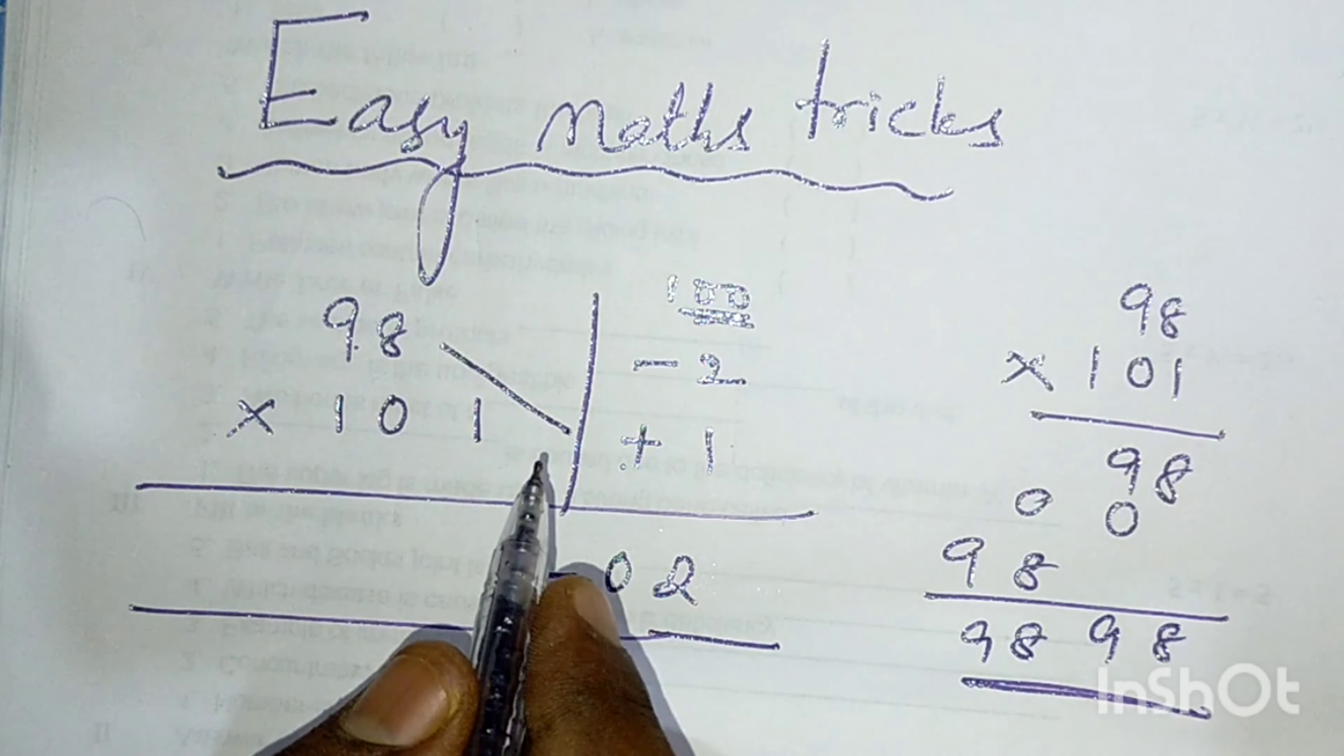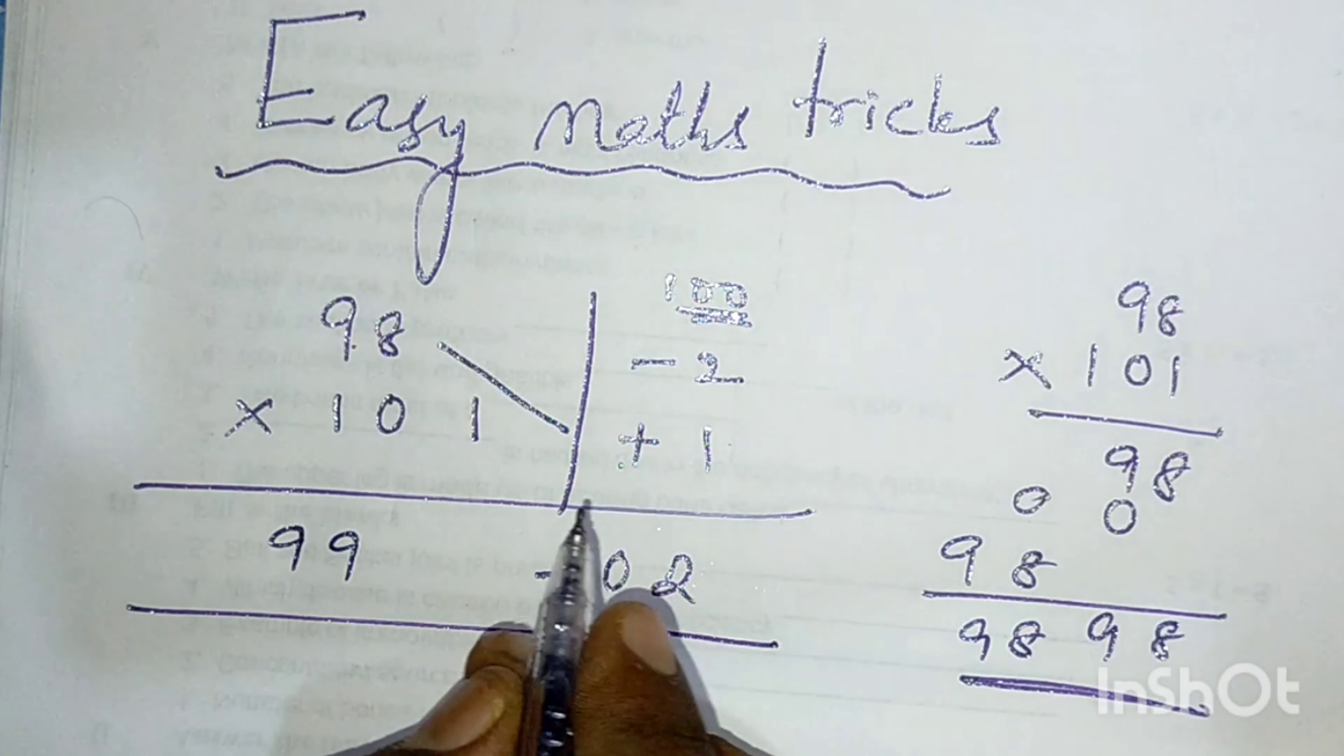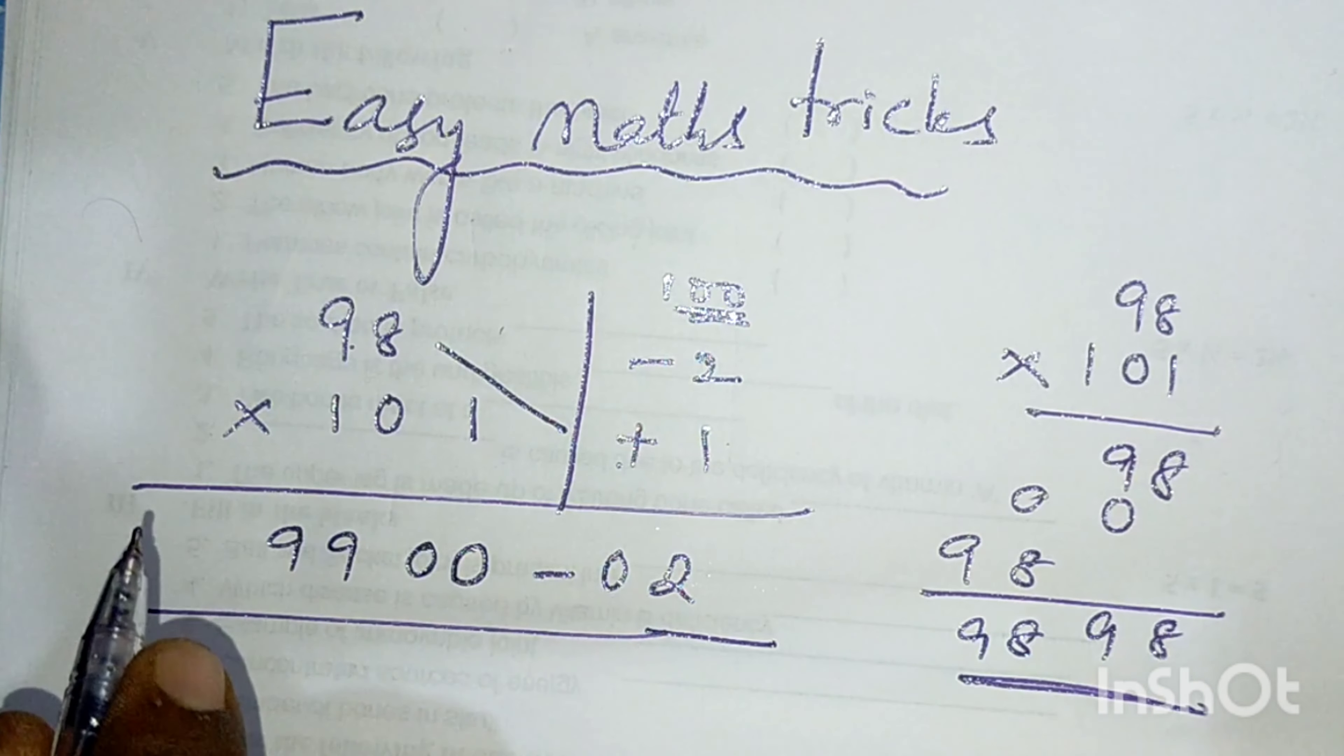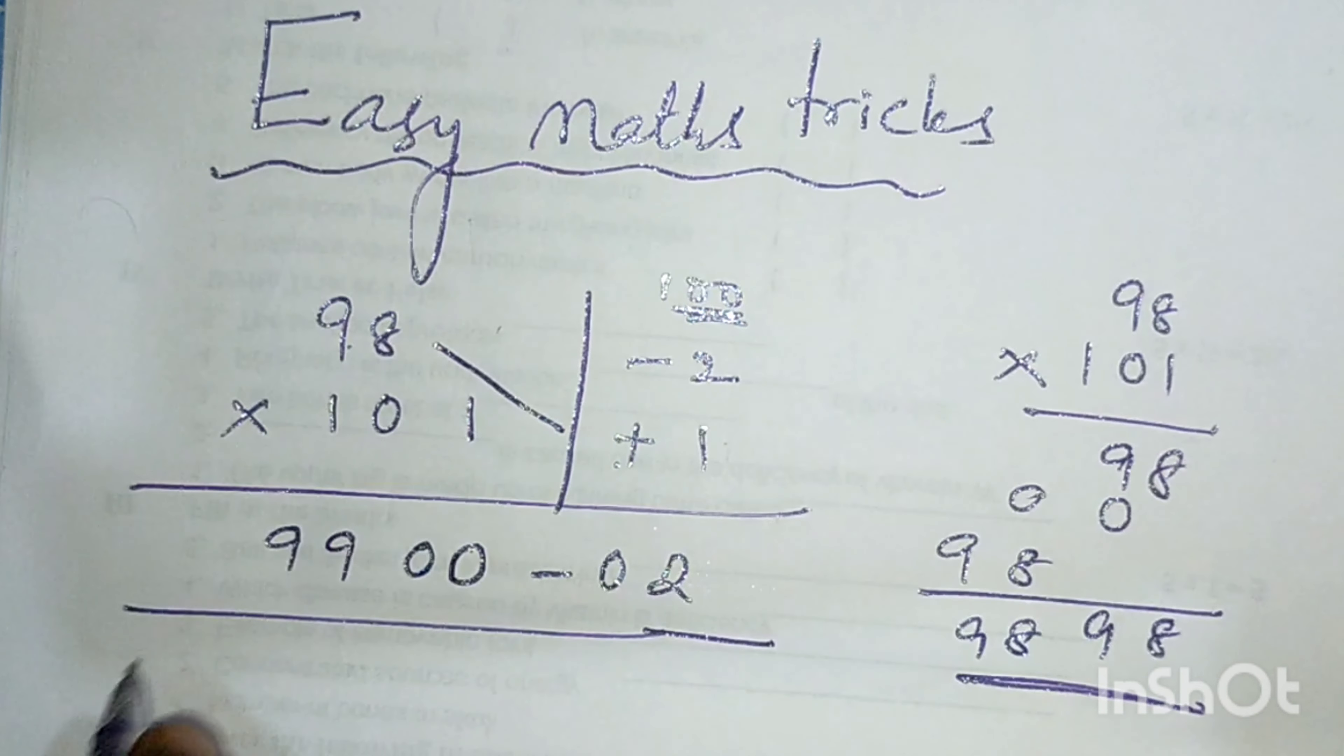101 minus 2 is also 99. And here when we are taking minus, direct answer we not get. We have to take two zeros in unit and tens place.